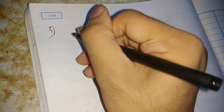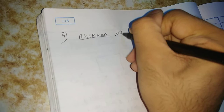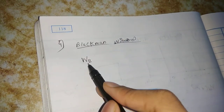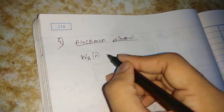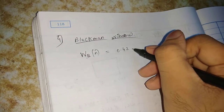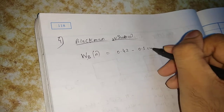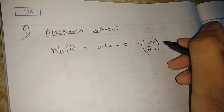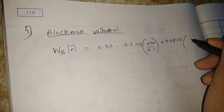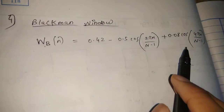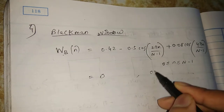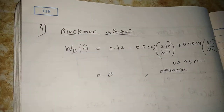The fourth window is the Blackman window. The Blackman window equation is: w(n) = 0.42 minus 0.5 cos(2πn / (N−1)) plus 0.08 cos(4πn / (N−1)), for the range 0 ≤ n ≤ N−1, and equals 0 otherwise. This is the equation for the Blackman window.